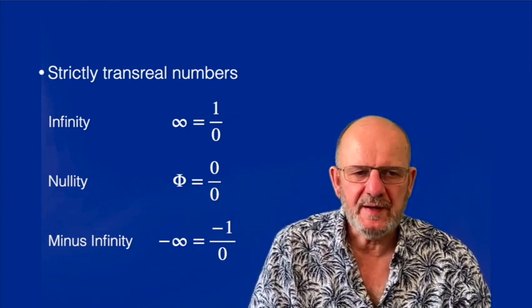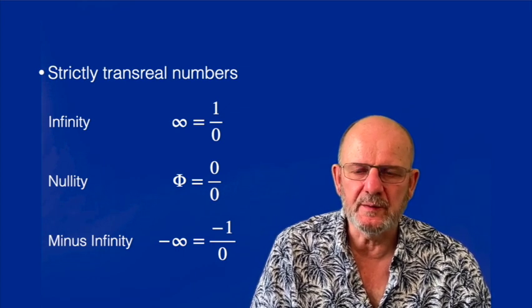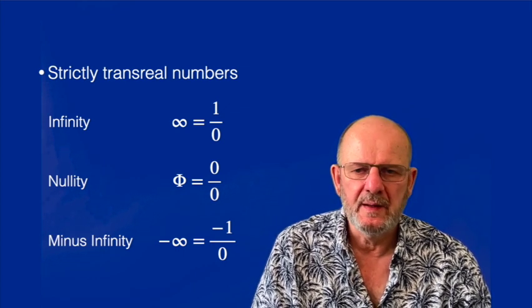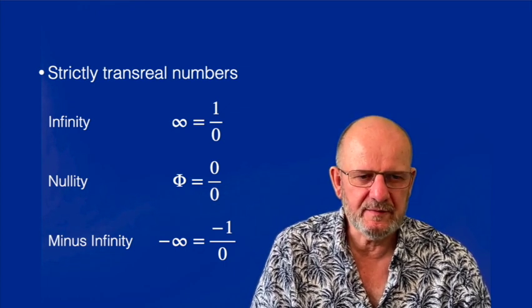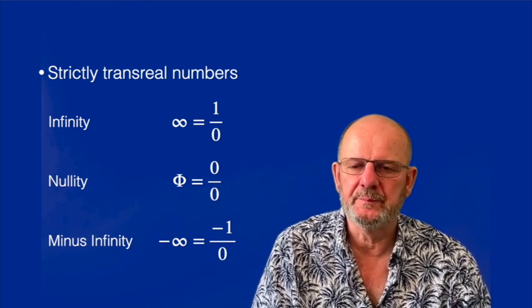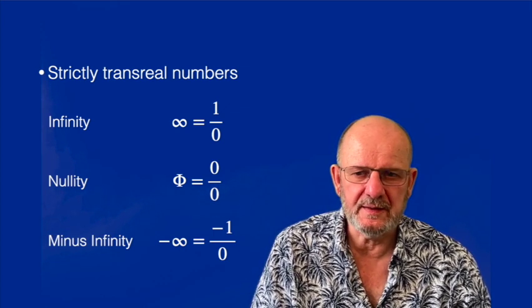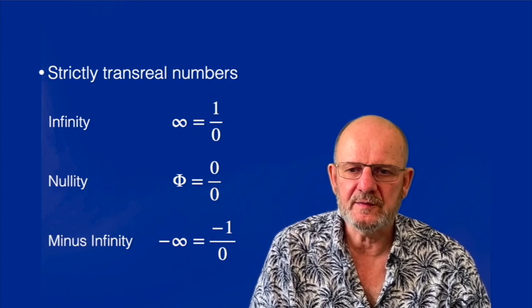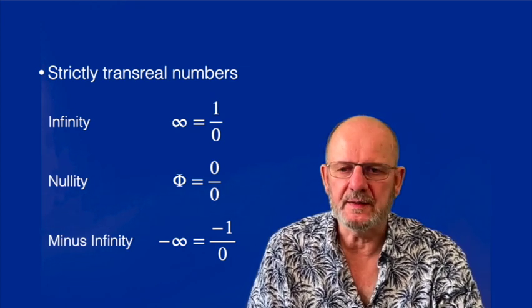There are also definite numbers. Infinity definitely is 1 over 0 and not any other number. That's what definitely means in mathematics. Definitely this number and not any other. Nullity is definitely 0 over 0 and not any other number. And minus infinity is definitely minus 1 over 0 and not any other number.